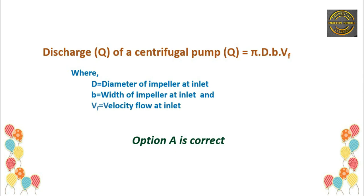Explanation: Discharge of a centrifugal pump Q = π D B × V_F, where D is the diameter of the impeller at inlet, B is the width of the impeller at inlet, and V_F is the velocity of flow at inlet. Option A is correct.